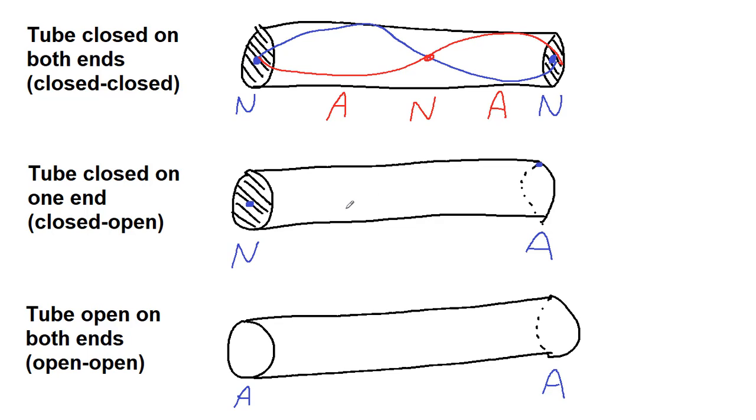For a tube closed on one end, so first of all, a tube closed on both ends, a lot of people think when could that possibly be the case? But if you're in a fairly square room, like a lot of classrooms, that really is functionally a tube closed on both ends for sound waves. You tend not to get standing waves in that situation, but you could.